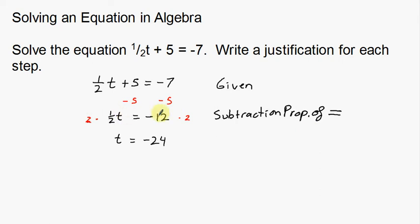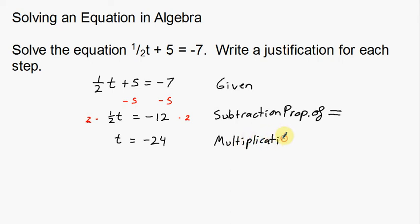Now the next step going from line 2 to line 3 — what did we do here? We multiplied by 2, so this was the multiplication property of equality.